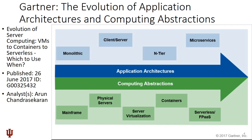When we look at this, we see on the one hand that we are addressing the application architecture and on the other hand we are looking at the computing abstraction. When we look at the application architecture, the changes driving us towards containers and serverless computing are as follows: we started out with a monolithic application, which was transformed to client-server, then N-tier architectures, and nowadays we are talking about microservices — a historical evolution towards application architectures.